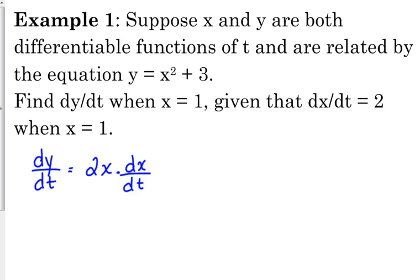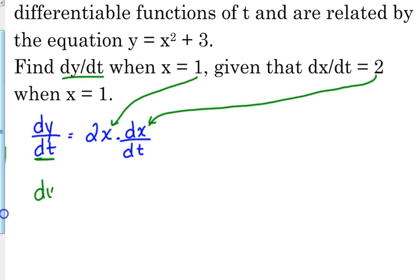So we want to find dy/dt when x is 1, so we can plug that in. And dx/dt is 2, so all we have to do is plug those values in. So we've got 2 times 1 times 2, which is 4.